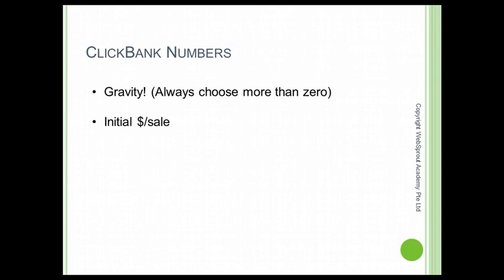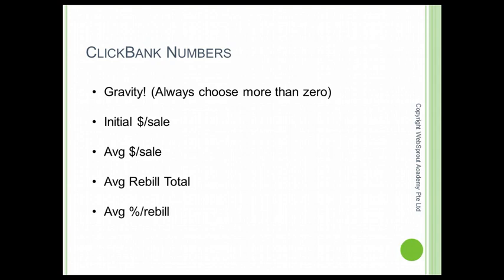The next thing is the initial dollar per sale. This number tells you how much you will get paid if someone were to purchase this product. And then there's the average dollar per sale, which I'll share more on in a moment, along with average rebill total and average percent rebill — these are more for the recurring commission component.